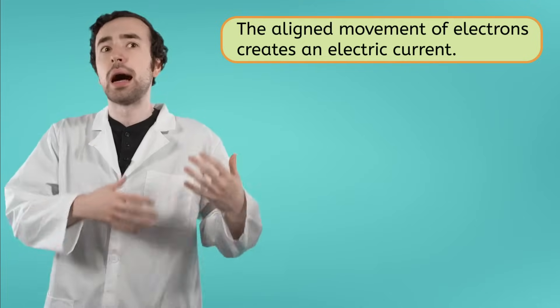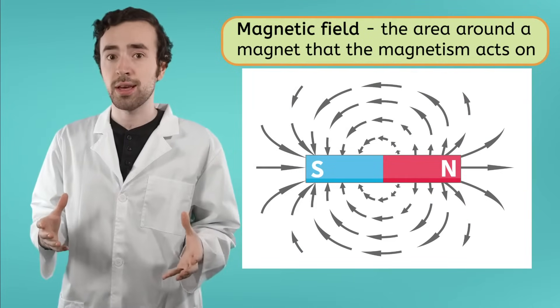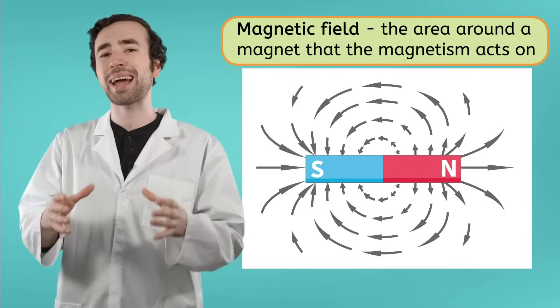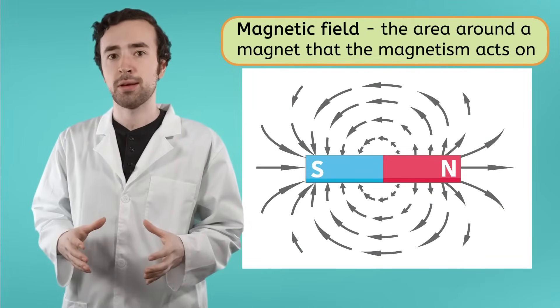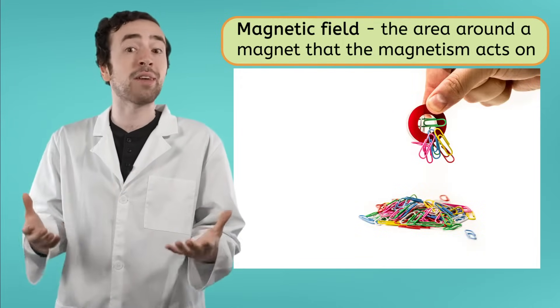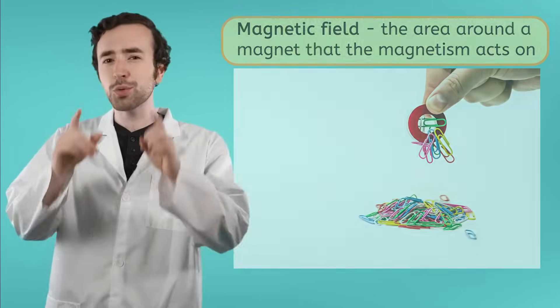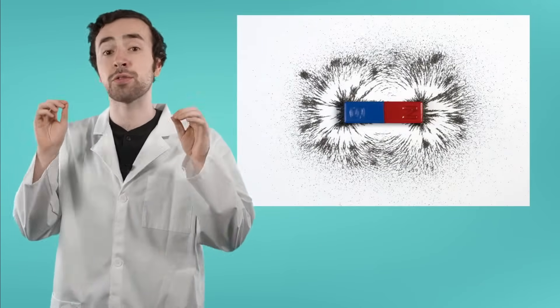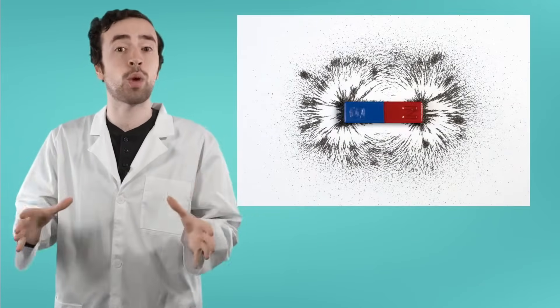This aligned electron spinning also creates a magnetic field. That's the area around a magnet where the magnet's force can act on. That's how magnets can attract and repel things without even having to touch them. You can actually visualize a magnetic field by placing lots of little bits of iron filings on a surface around a magnet.